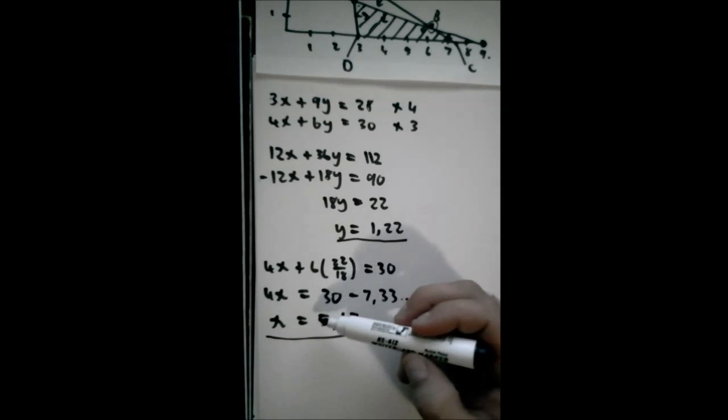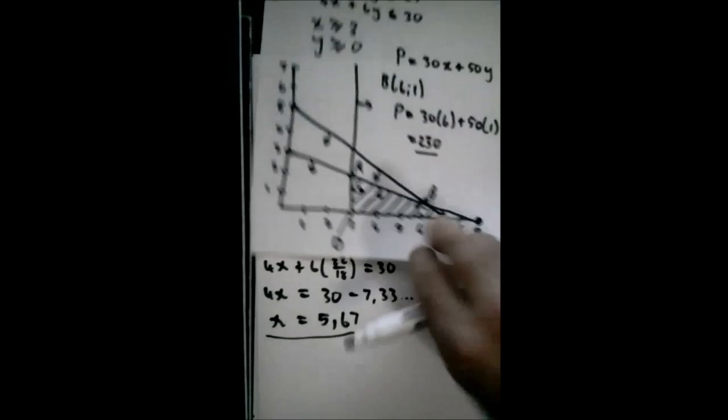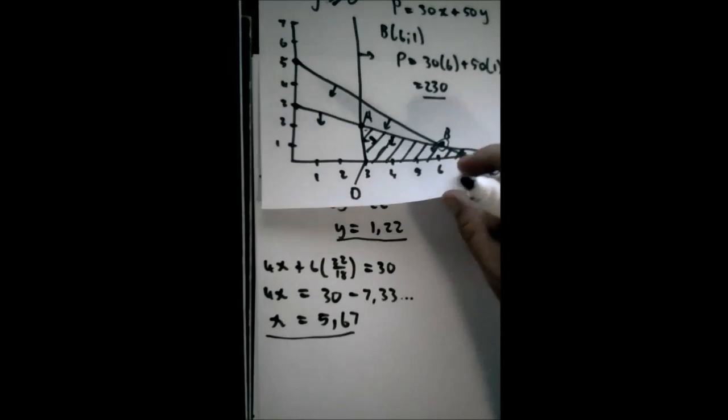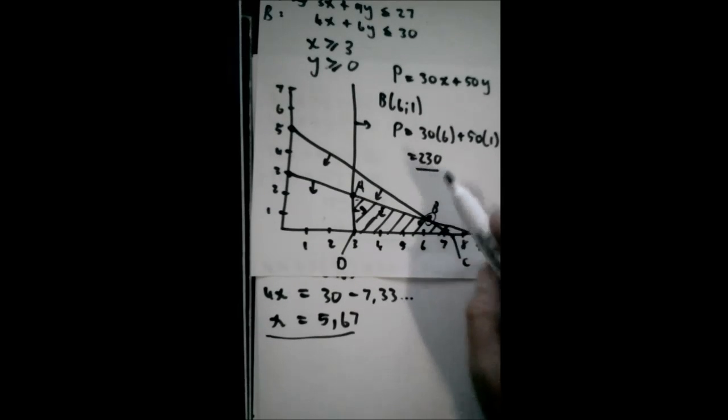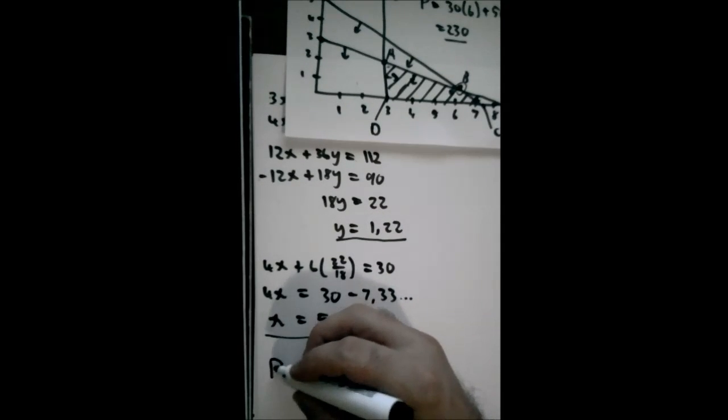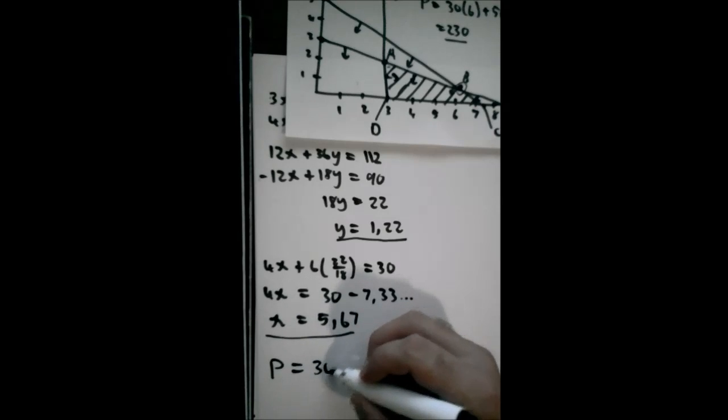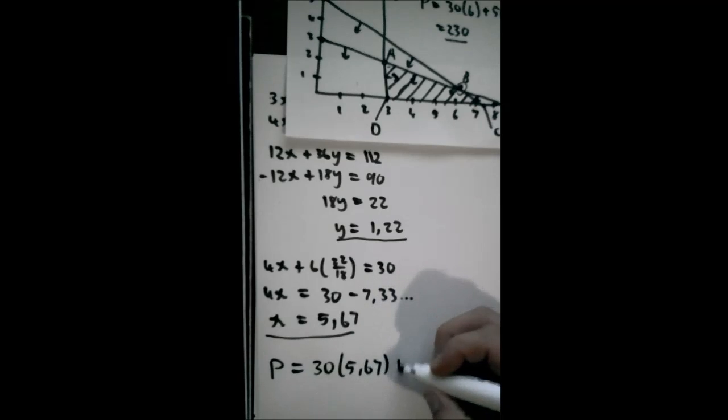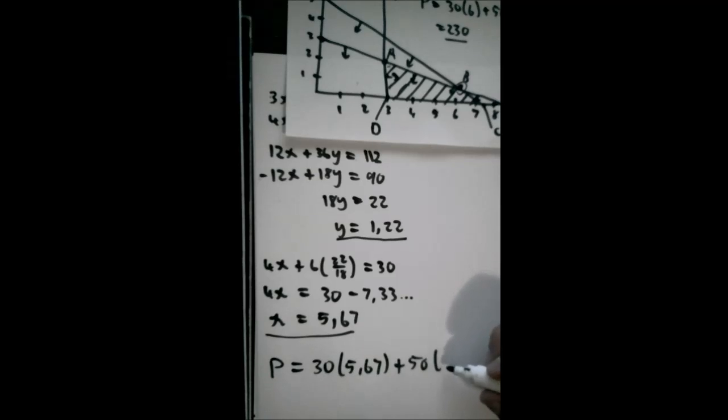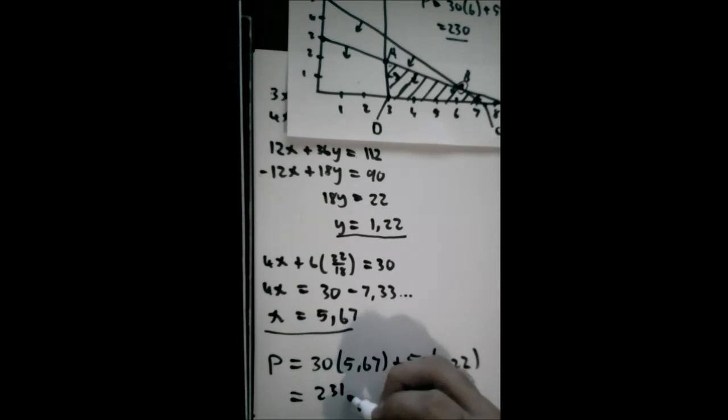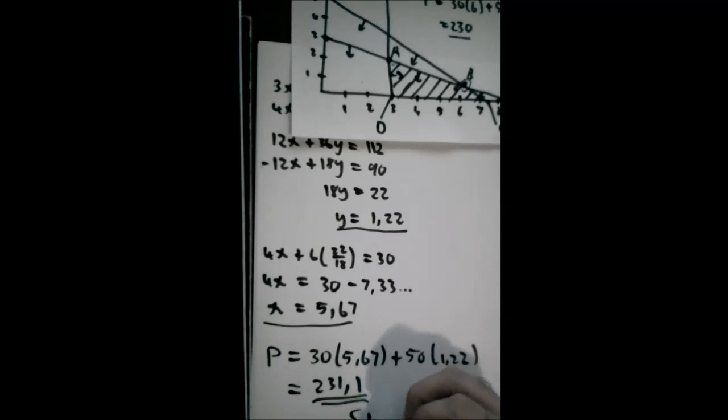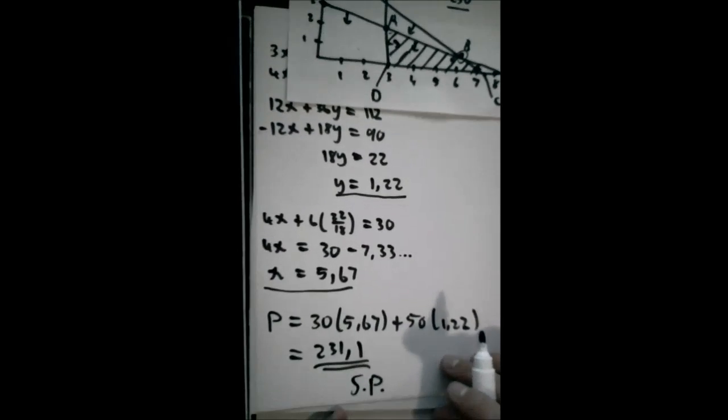So we've got those two new values now. And to see what the shadow price is, we're going to plug these two values back into our profit function. Like we can see here, it was 230 with the normal constraints. So now, if we're going to say P equals 30 times x, which is 5.67, plus 50 times your y value, which is 1.22. Then what do we get? We get 251.1, which is 1 Rand and 10 cents more than the initial profit. So therefore, our shadow price on fragrance A is 1.1.